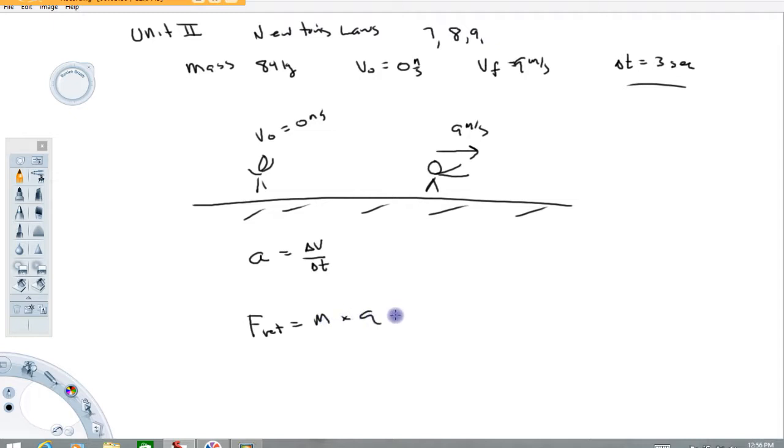Part C says how far does the sprinter go during the three seconds. That's a motion question, the type of stuff we talked about in Unit 1. Start by drawing a velocity graph. At t equals zero the person's not moving, so the first point on that graph might be zero zero. Then sometime later we have a velocity. You put that point on this graph where it belongs, then connect the dots between this point and your next point. The area bound under the curve will give the displacement.